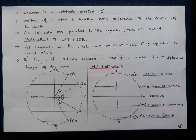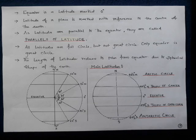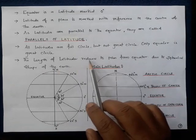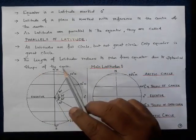All latitudes are full circles but not great circles — only the equator is the great circle. The reason is the spherical shape of the earth: the circumferential area decreases from the equator towards the poles, so all latitudes are full circles but not great circles. The equator is a great circle because it has the exact circumferential area of the earth. The length of latitudes reduces towards the poles from the equator due to the spherical shape of the earth.